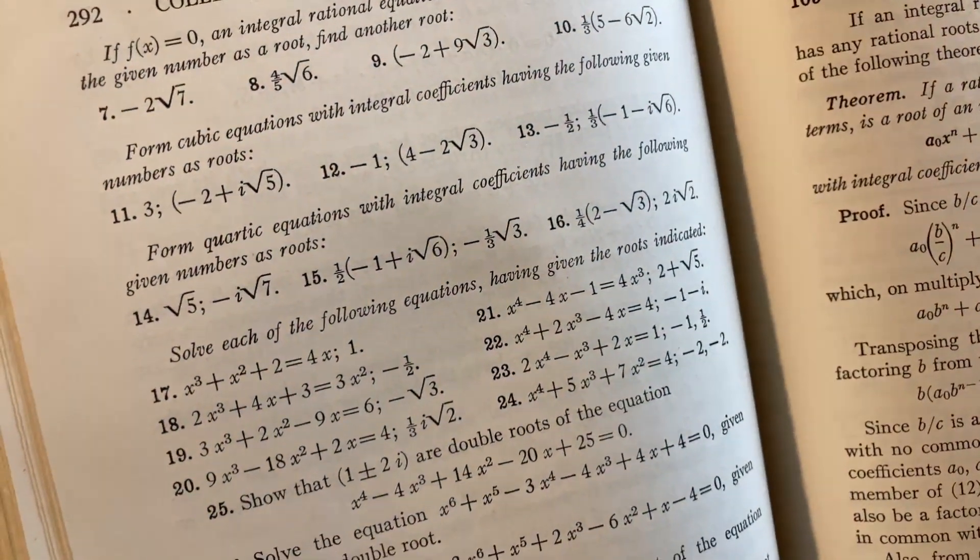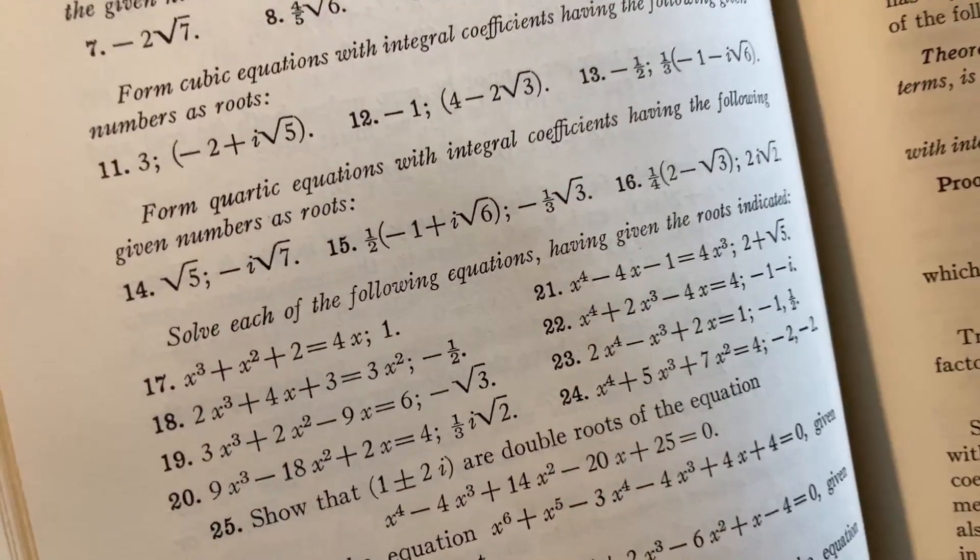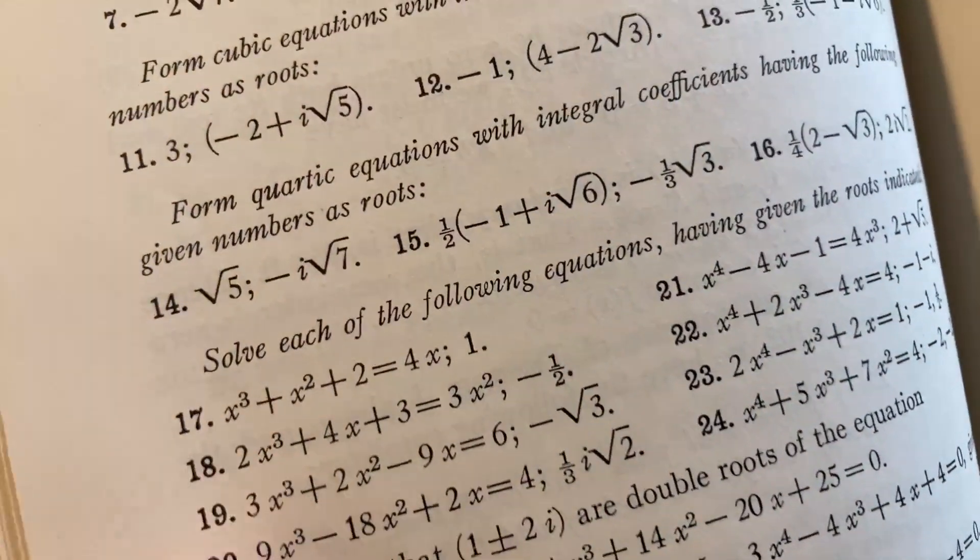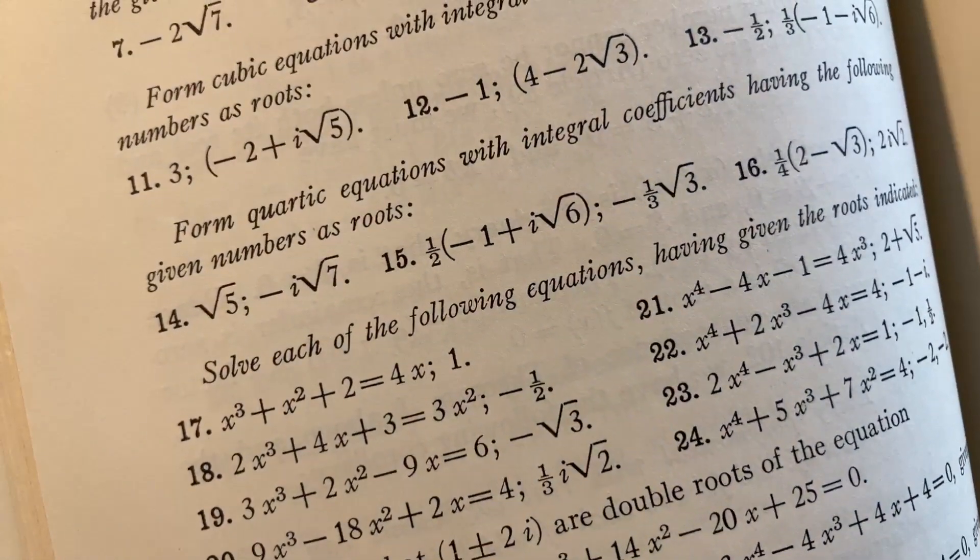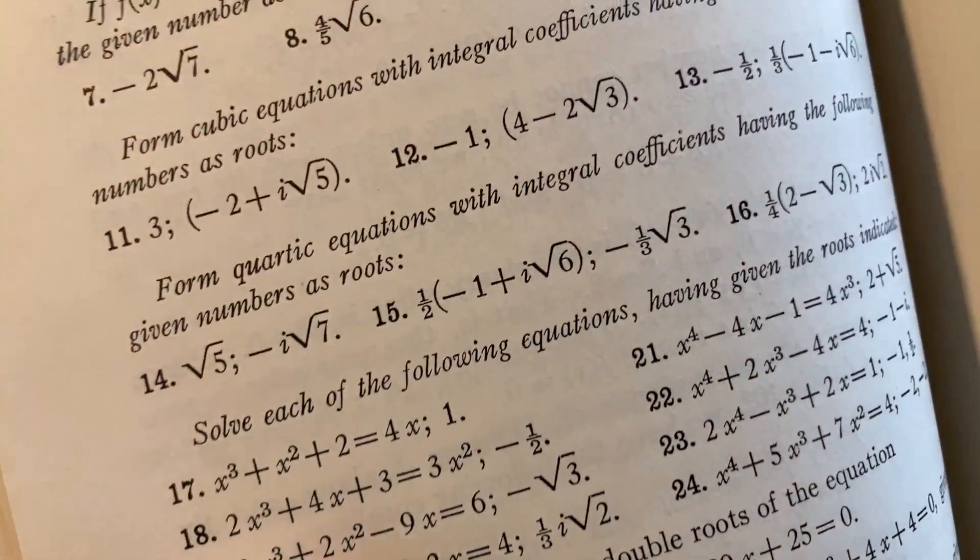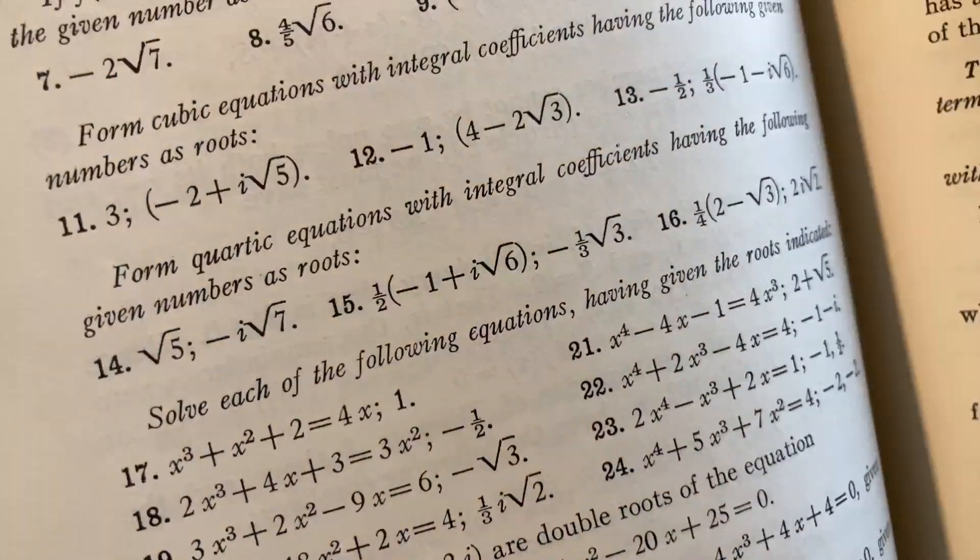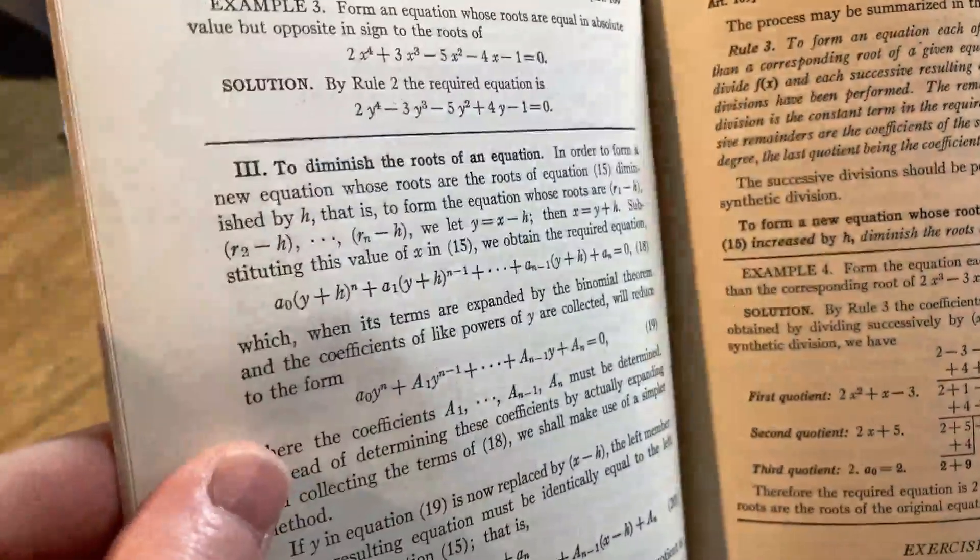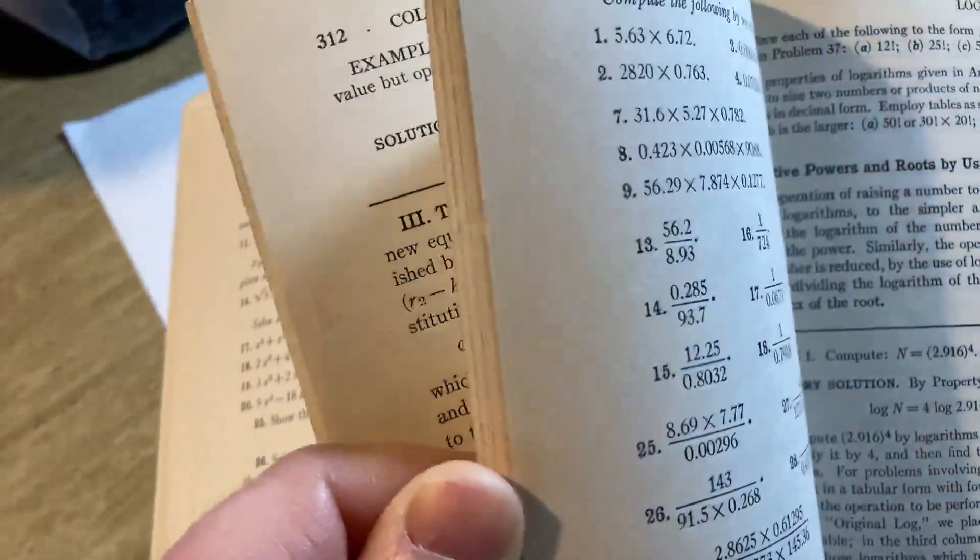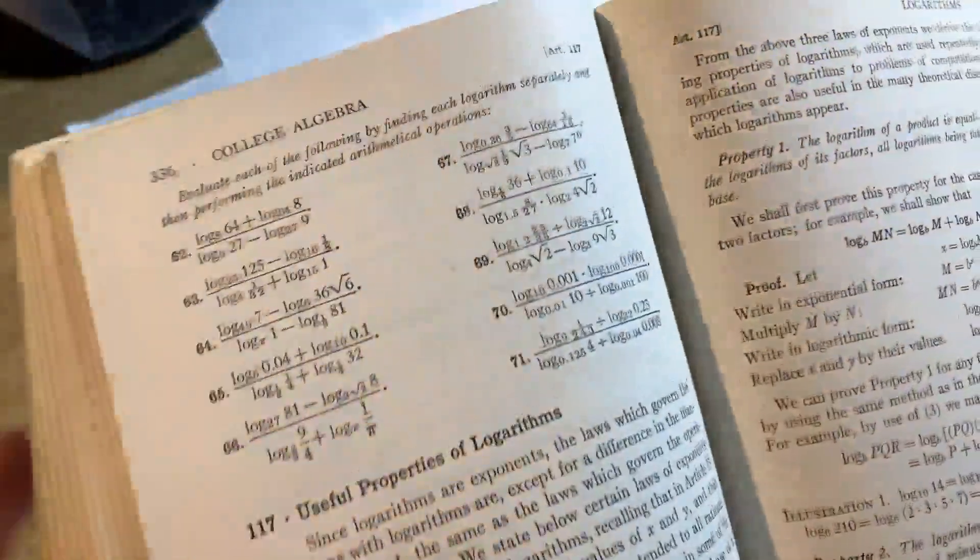Solve each of the following equations having given the roots indicated. So here we have x cubed plus x squared plus two equals four x, and they tell us one is a root. So for this problem, you would use synthetic division using the knowledge that one is a root. Because that tells you that x minus one is a factor. And then you get a remainder of zero, and it reduces your cubic into a quadratic. And then you can solve it. That was a lot of information, but just sharing some knowledge. If you don't understand that, don't feel bad. It's okay. If you understand that, then you're like, oh yeah, that totally makes sense. No worries if you don't understand. The book explains it. The book explains all of this. It's a college algebra book.